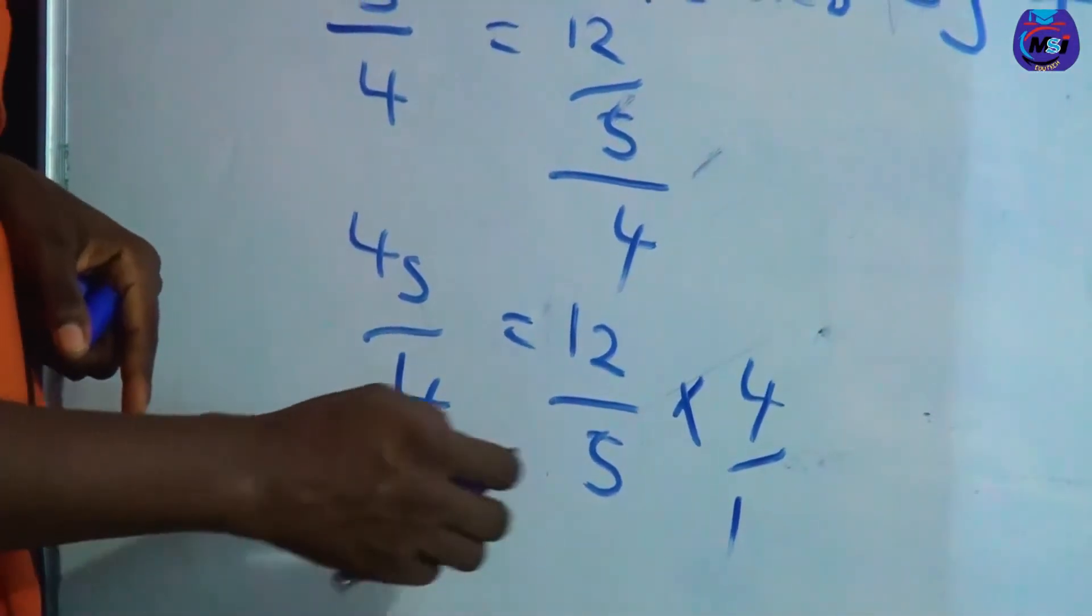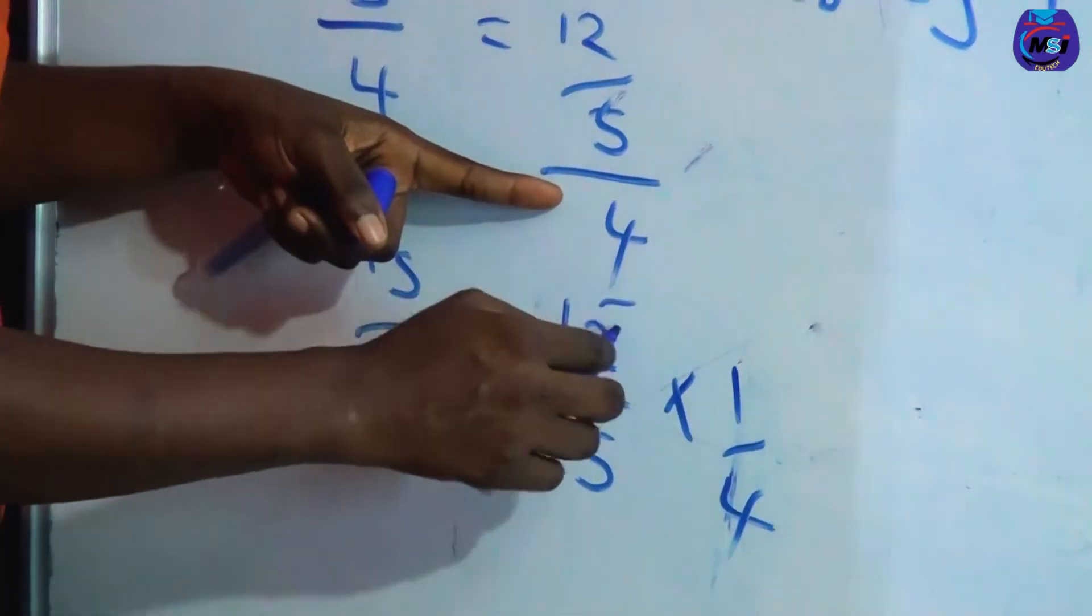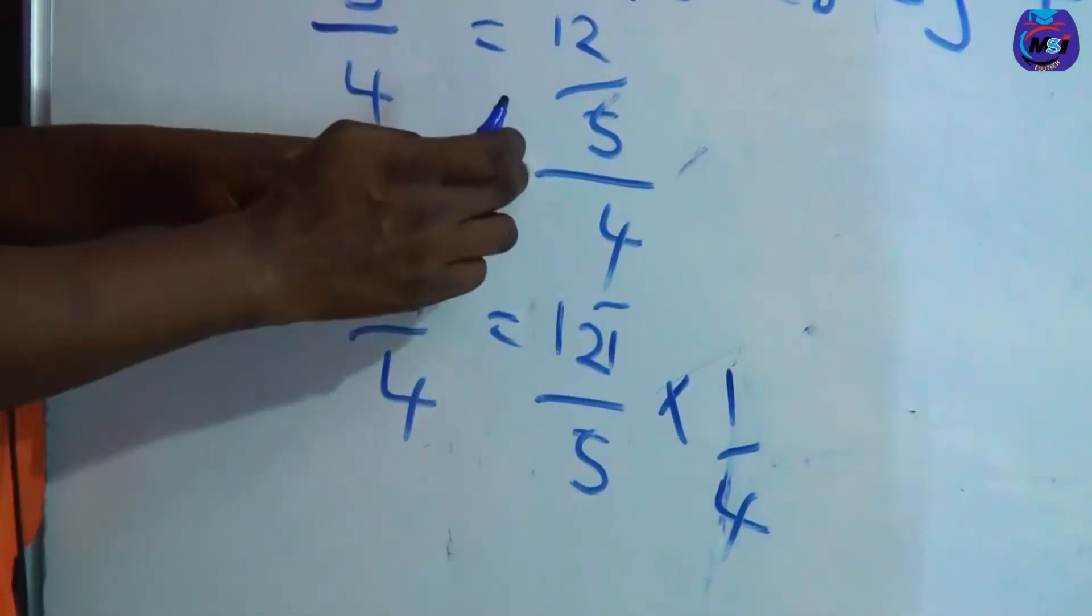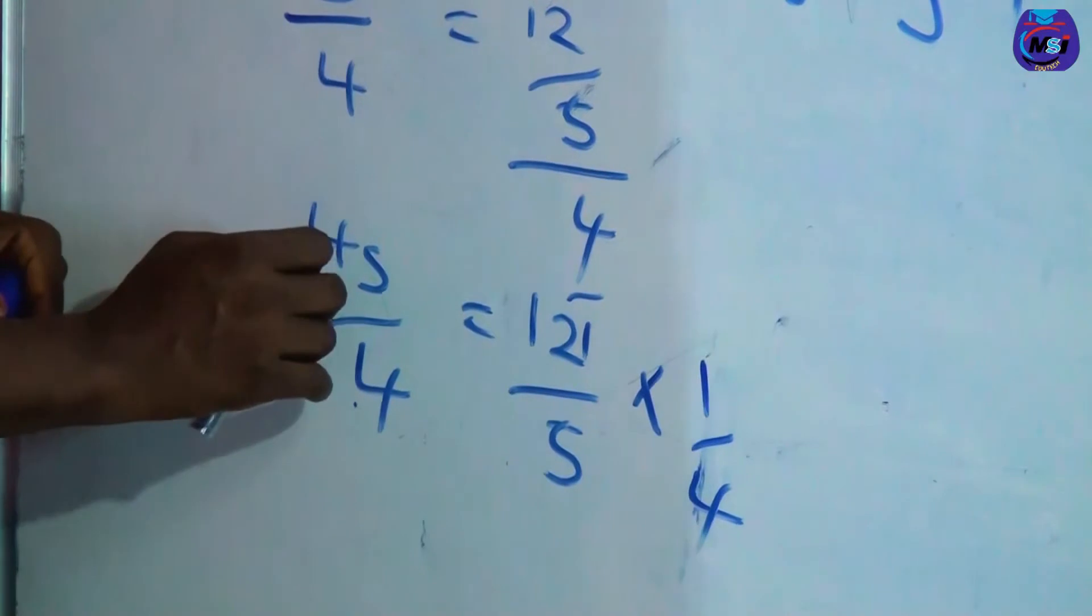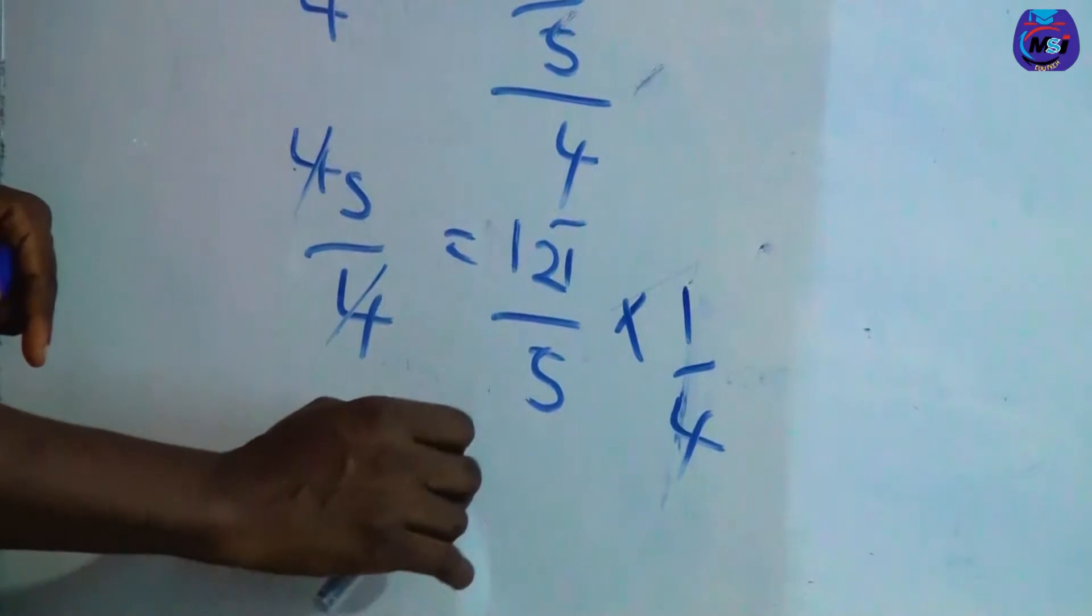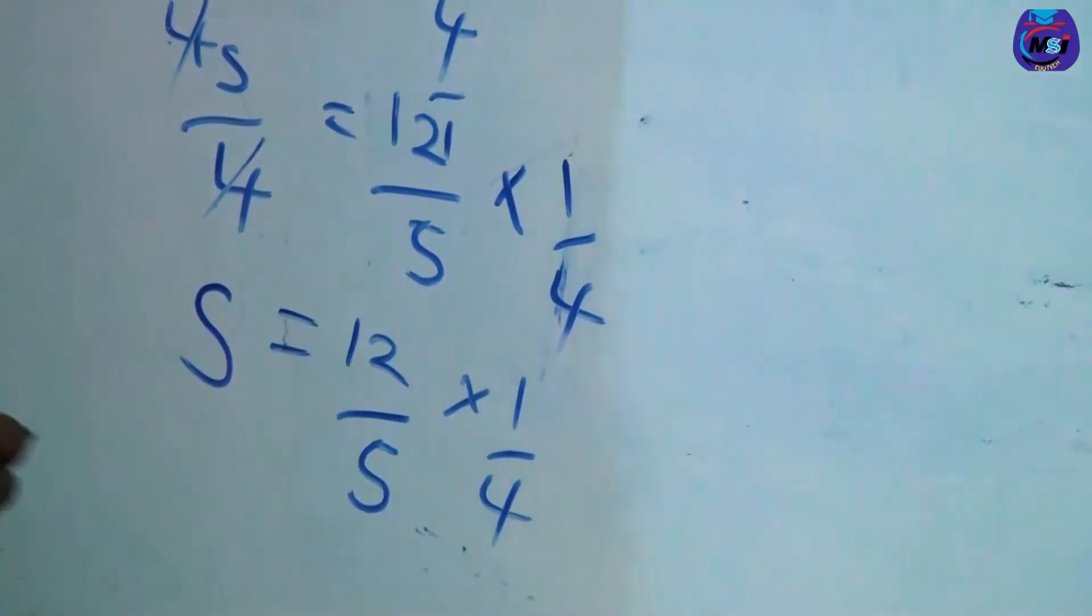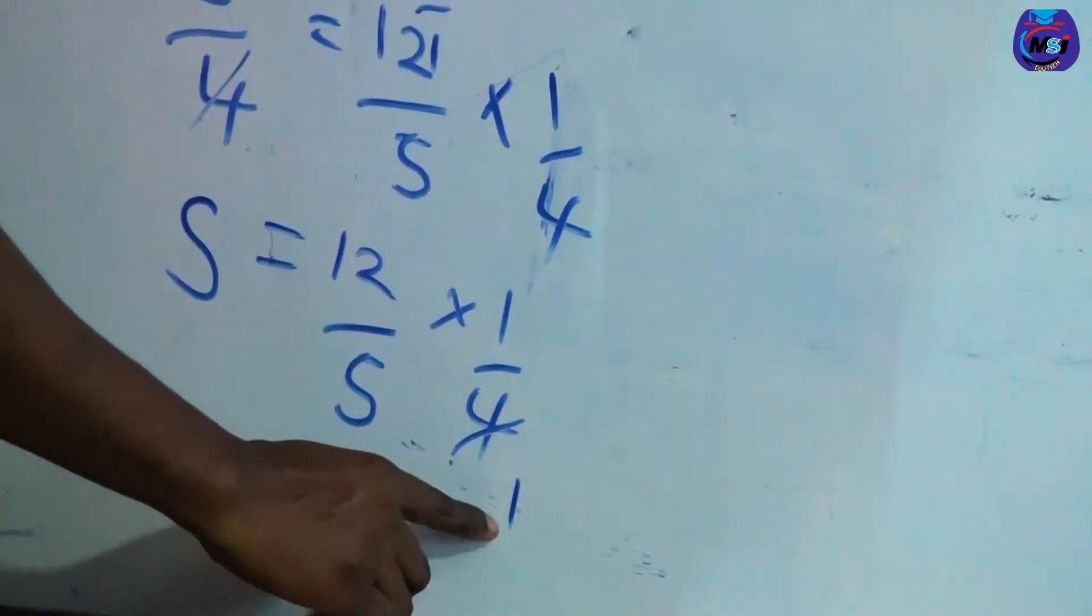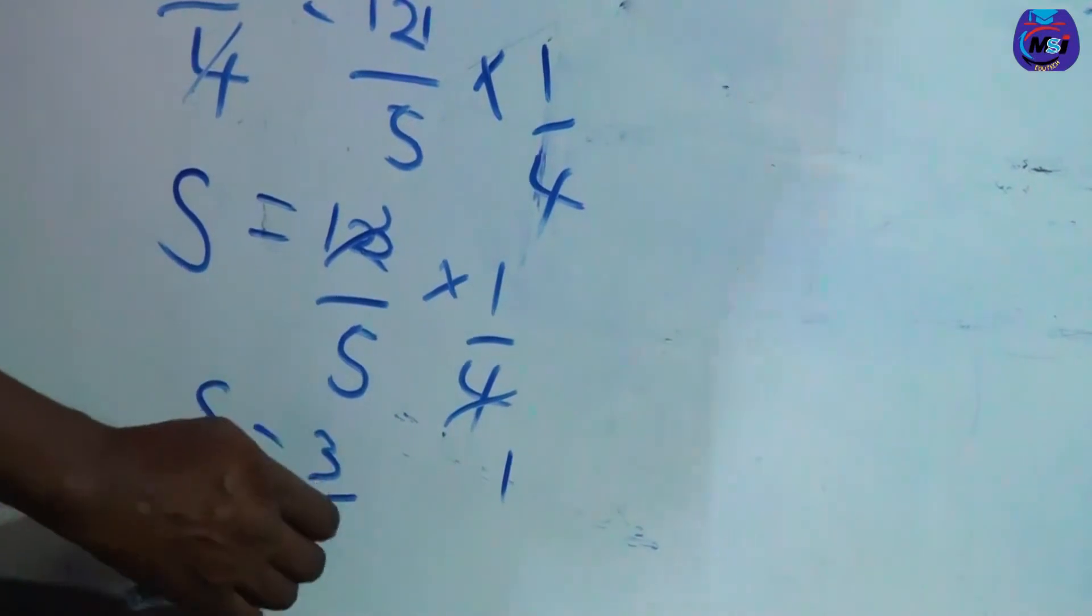4 crosses out 4 here, we have x standing alone. x is equal to 12 over 5 times 1 over 4. Now 4 can cancel out 4, 1 in 1 time, and then 4 in 3. So x is 3 over 5.